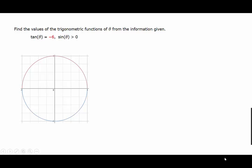Find the values of the trigonometric functions of theta from the information given. We are told that the tangent is negative, so that means that theta will either be in the second or the fourth quadrant. We're told that the sine is positive, so that tells us that the y-coordinate will be positive, so that means that theta is going to be in the second quadrant.